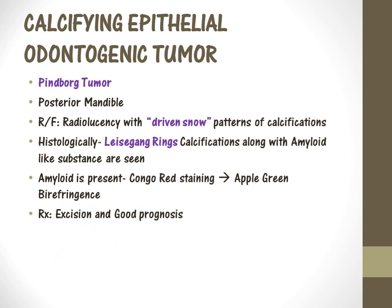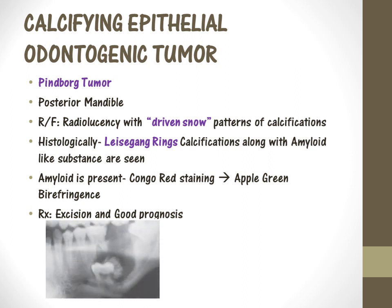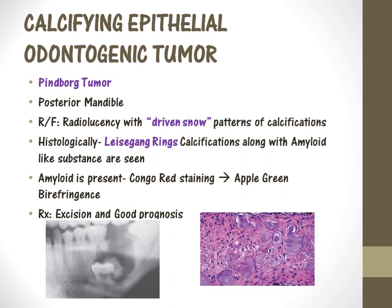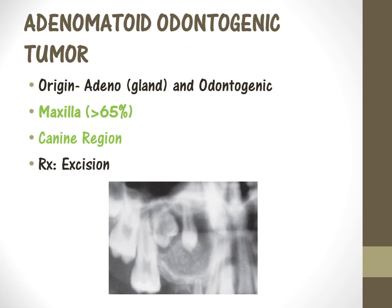The second tumor is the calcifying epithelial odontogenic tumor, also called the Pindborg tumor. It occurs in the posterior mandibular region. Radiographically, it shows a driven snow pattern of calcification — you can see radiopaque structures that look like driven snow. Histologically, there are Liesegang rings — purple rings along with amyloid-like substance. Since amyloid is present, Congo red staining produces apple-green birefringence. Treatment is complete excision and this tumor has a very good prognosis.